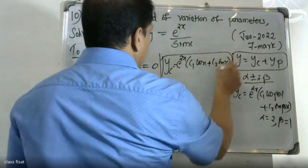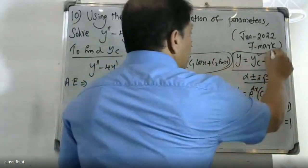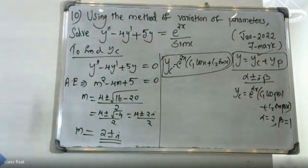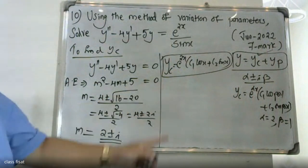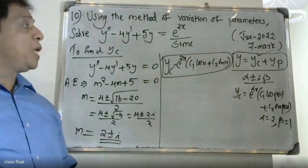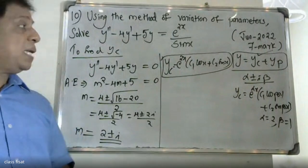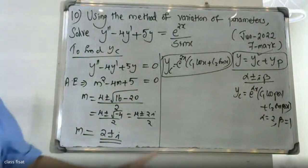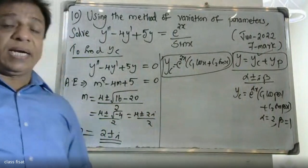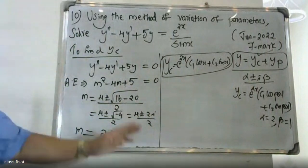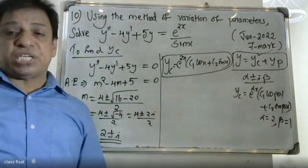So yc = e^(2x)(c1·cos(x) + c2·sin(x)). This is the complementary function. Now we use the formula called the method of variation of parameters.